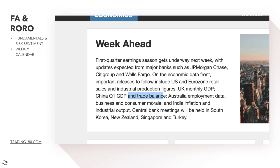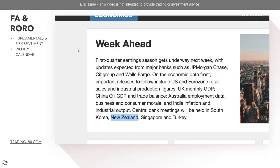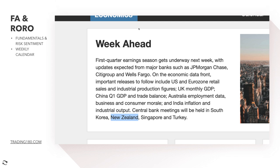China's GDP and trade balance data matters because it directly affects Australia and New Zealand, whose biggest trade partners are China. If China is growing, that has a knock-on effect on commodity currencies like the Australian and New Zealand dollars. Also watch Australia's employment data, business and consumer morale, central bank meetings in South Korea, New Zealand (RBNZ), Singapore, and Turkey.